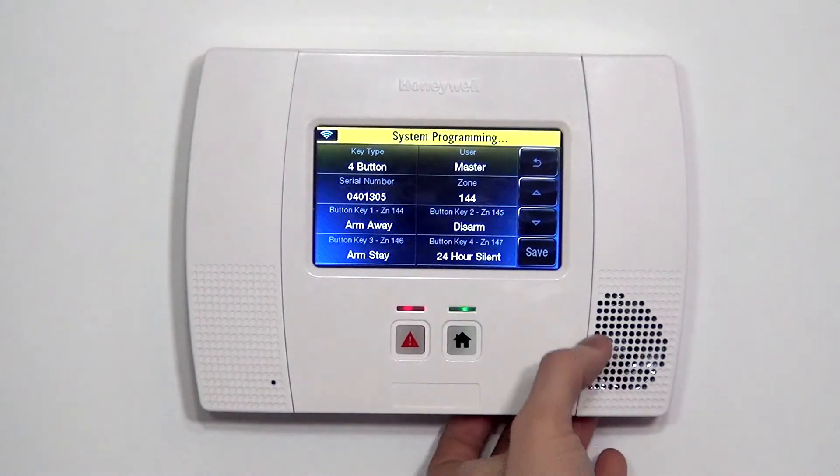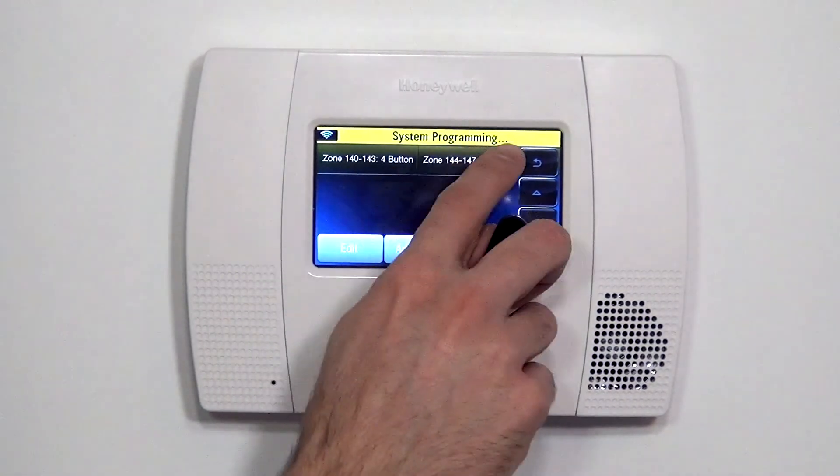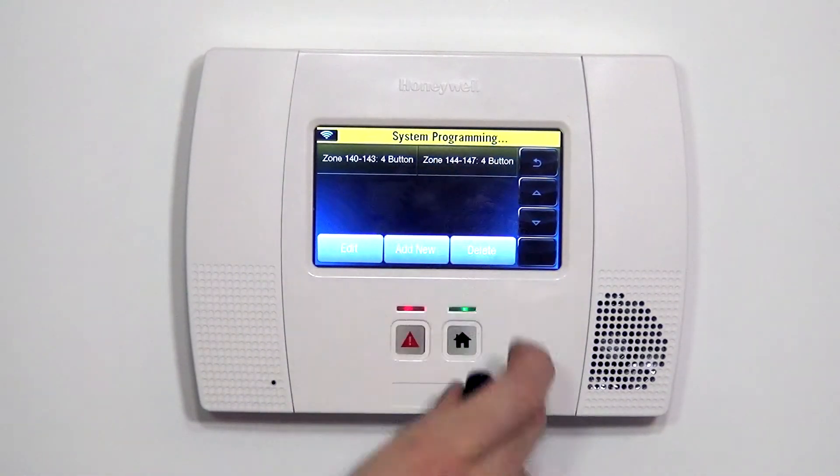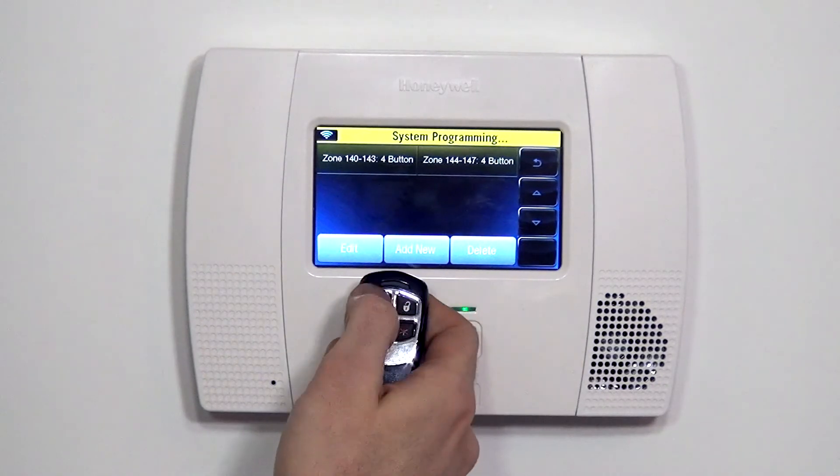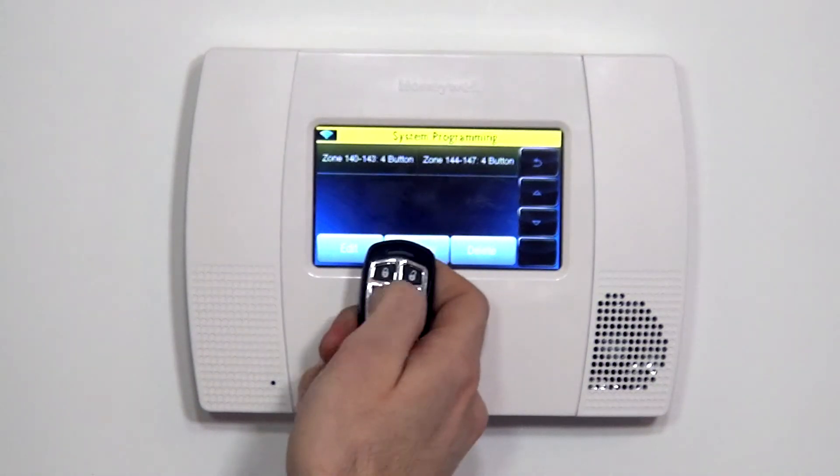Very important that we save our selection. And we can see now zones 144 through 147 are programmed: 144, 145, 146, and 147.